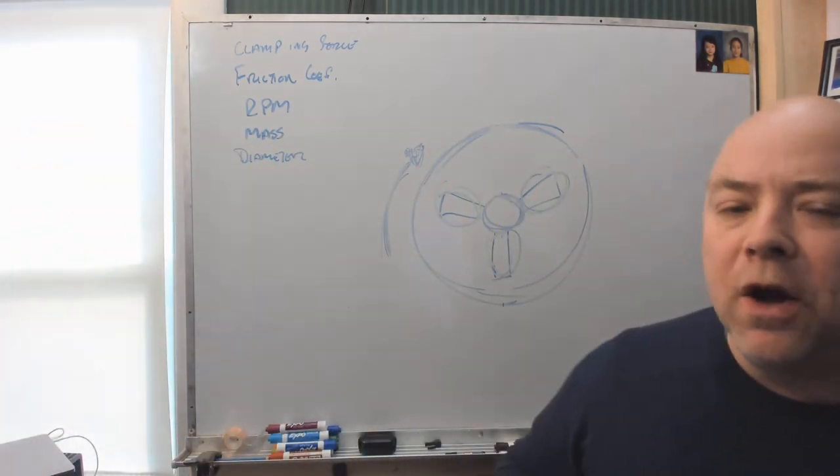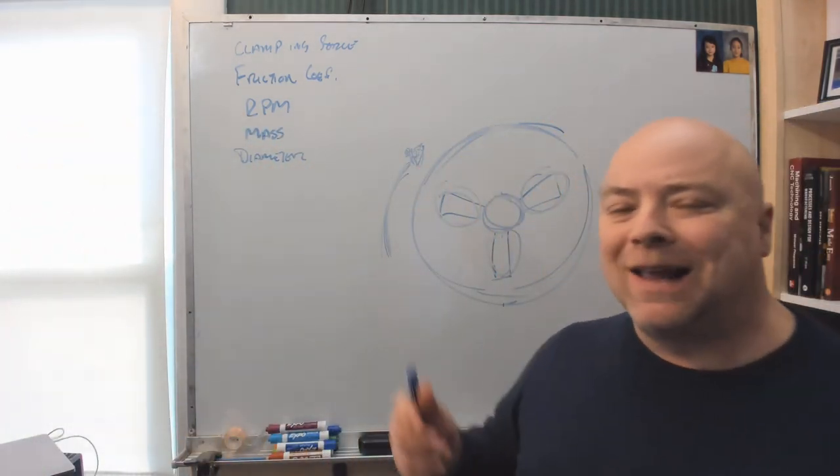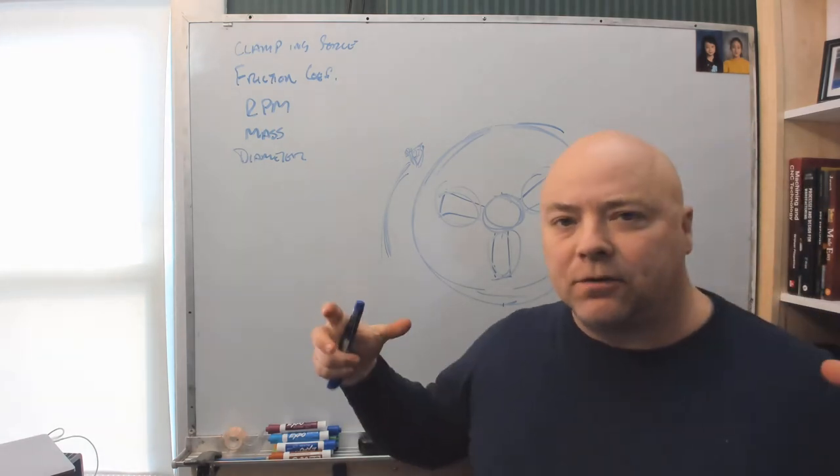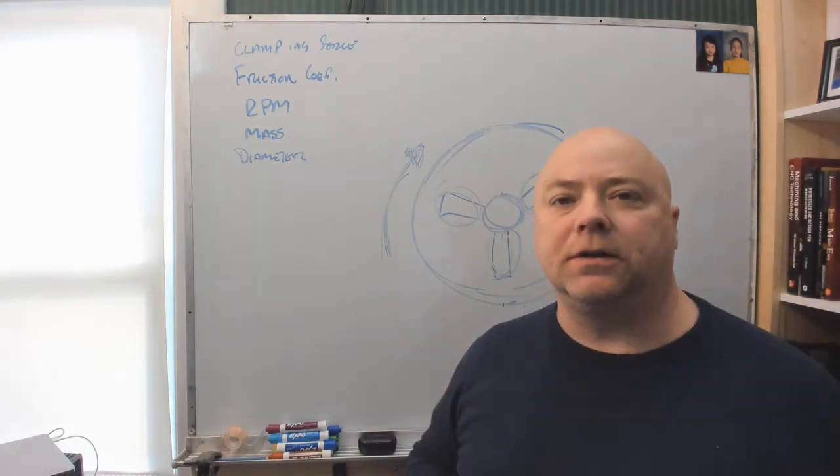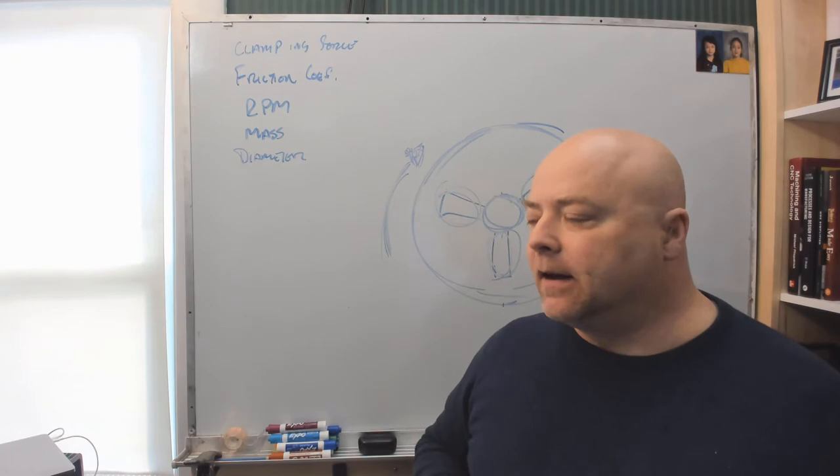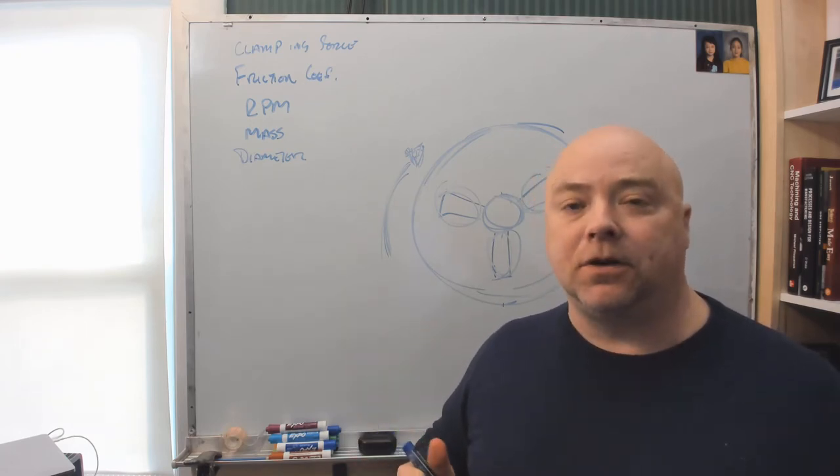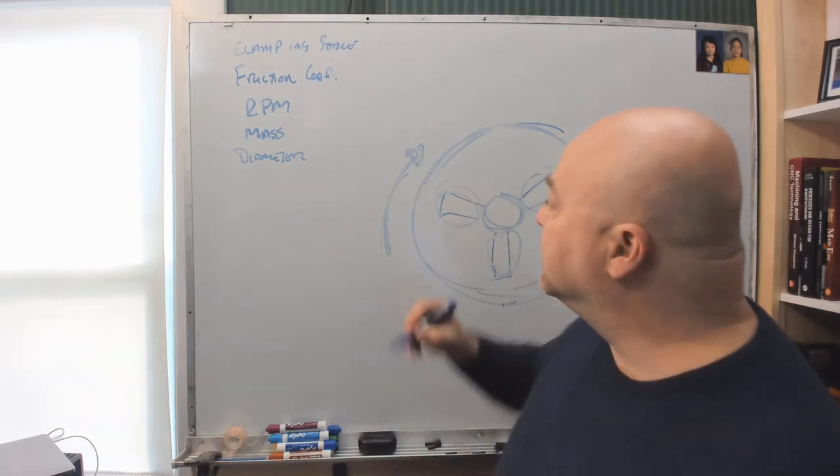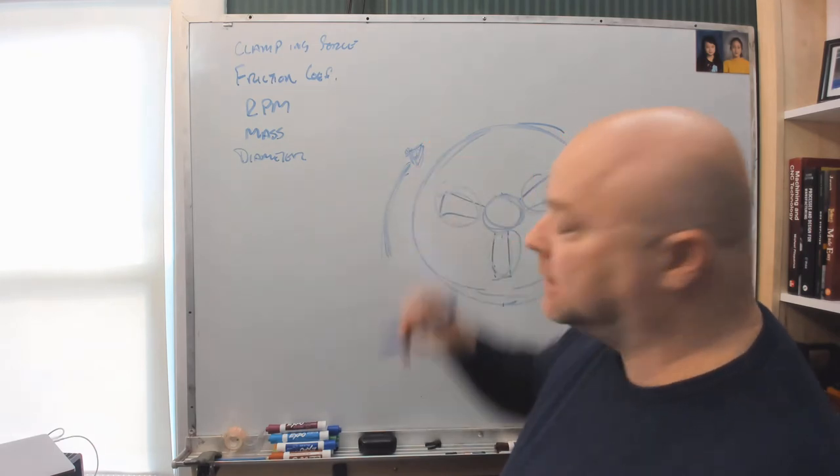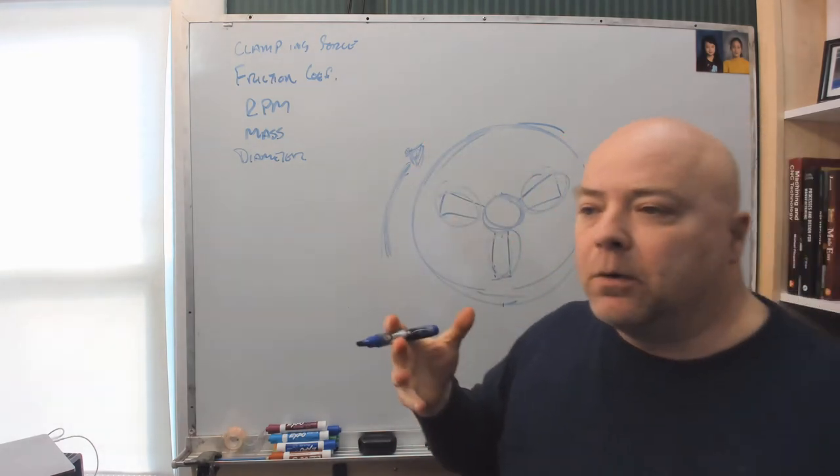In this problem, we know what the applied clamping force is, how much hydraulic pressure is pushing the chuck jaws together, the mass of the chuck jaws, and the spindle speed, so we know the rotational velocity. What we're trying